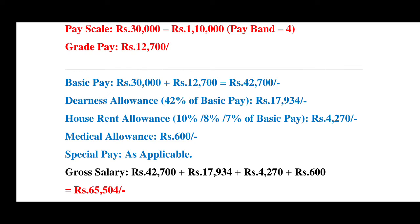The total basic pay is ₹30,000 plus ₹12,700 equals ₹42,700. The Dearness Allowance on ₹42,700 is ₹17,934. House Rent Allowance is at ₹10,000, ₹8,000, or ₹7,000 of basic pay depending on the city category.